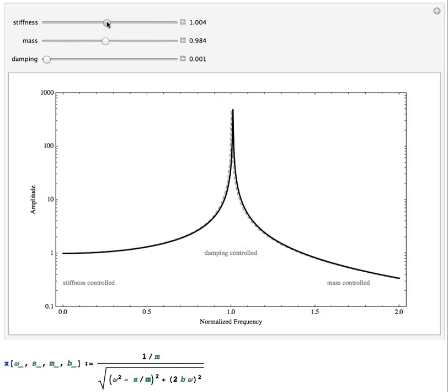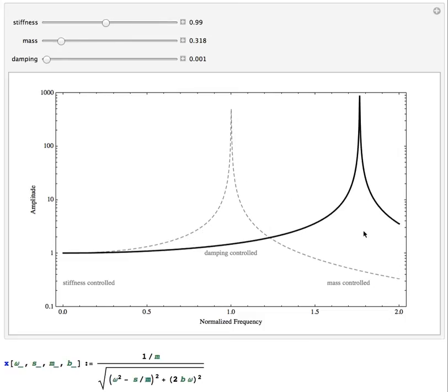Do the same thing with the mass. If I change the mass of the system, in the mass-controlled region, because I've made the mass smaller, the natural frequency is higher, but in this region of the graph, the response is much higher than it was before.